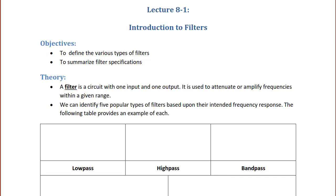Theory. A filter is a circuit with one input and one output. It is used to attenuate or amplify frequencies within a given range. We can identify five popular types of filters based upon their intended frequency response. The following table provides an example of each. The first one is a low-pass filter.